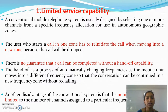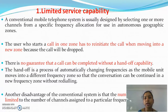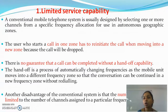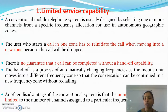First, coming to limited service capability. A conventional mobile telephone system is usually designed by selecting one or more channels from a specific frequency allocation for use in autonomous geographic zones. The user who starts a call in one zone has to reinitiate the call when moving into a new zone because the call will be dropped. There is no facility of handoff in the conventional mobile telephone system.